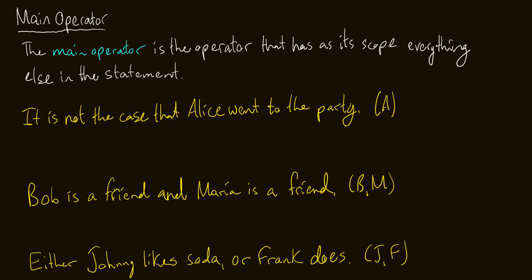At the end of each sentence I wrote some capital letters, and those are supposed to stand for the components of each sentence so we're all in agreement on where these letters are coming from. So we have 'It is not the case that Alice went to the party,' using a capital A. This is just going to be tilde A, because we're negating Alice went to the party with the phrase 'it is not the case that.'